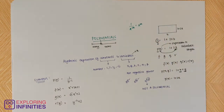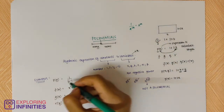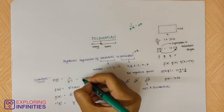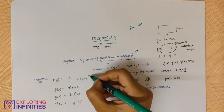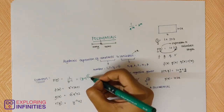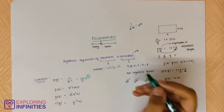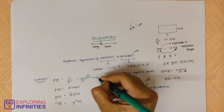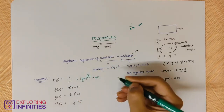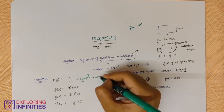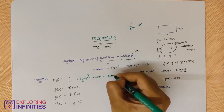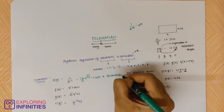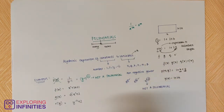We know the rule in exponents where 1 divided by a to the power m can be written as a to the power minus m. So 1/(y − 1) can be written as (y − 1) to the power minus 1. The expression has a negative power for the variable, so it is not a polynomial. You don't even need to write it as p(y) because it is not a polynomial.